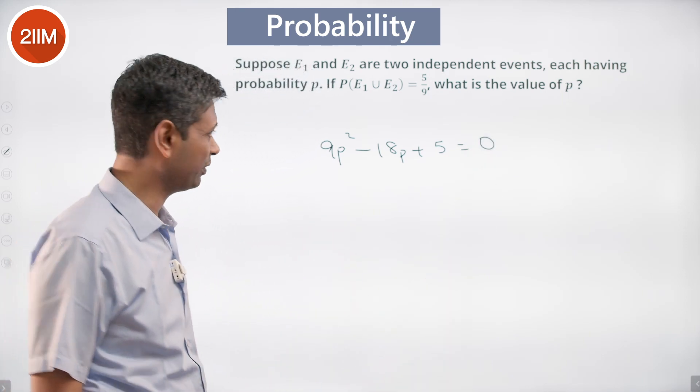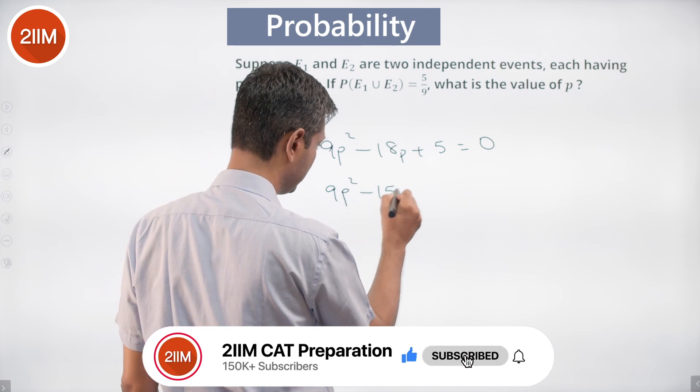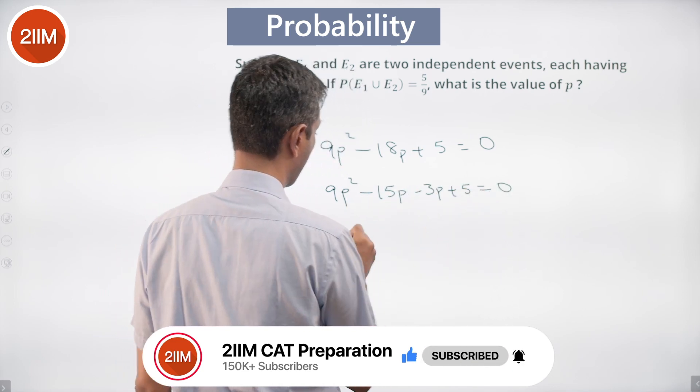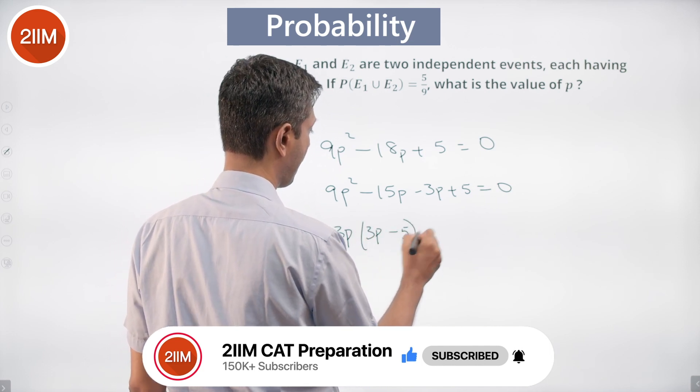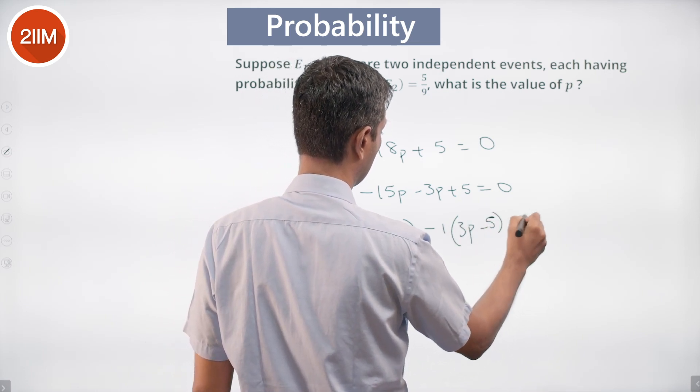Product is 45, breaks as minus 15 and minus 3. This is 3p into 3p minus 5 minus 1 into 3p minus 5 equal to 0.